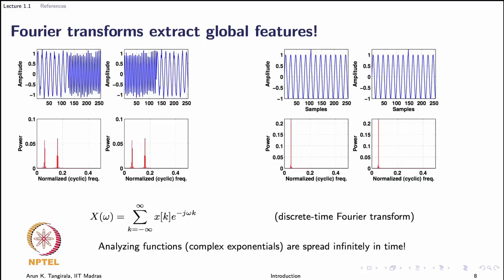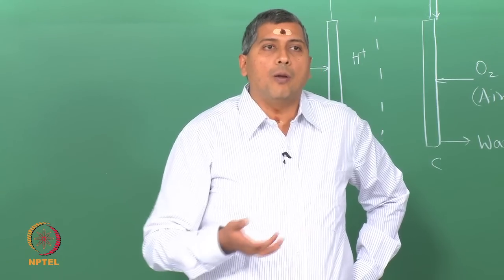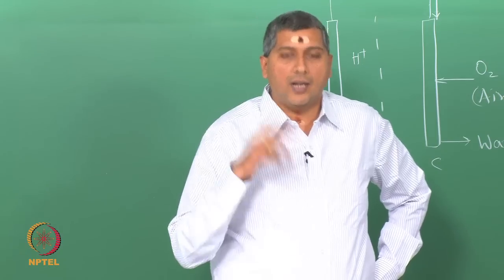Let me quickly give you a feel of why the tools are necessary. We have qualitatively talked about earlier that Fourier transforms are unable to give you local features. On the left you see two signals: two sine waves of two different frequencies occurring in series, but with the order switched. On the top you have the time series; in the bottom panel you have the spectra, with frequency on the x-axis and power on the y-axis — telling you how much each frequency component contributed to the overall power.